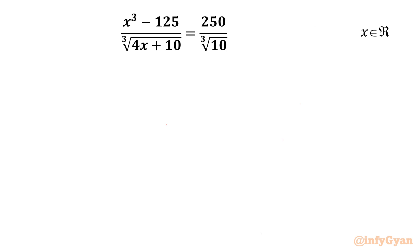Welcome back to Infigyan, my dear friends. Today in this video we are going to take up one very interesting and challenging radical equation problem. It is (x³ - 125) / ∛(4x+10) = 250 / ∛10, where x belongs to real numbers. So, let us get started.